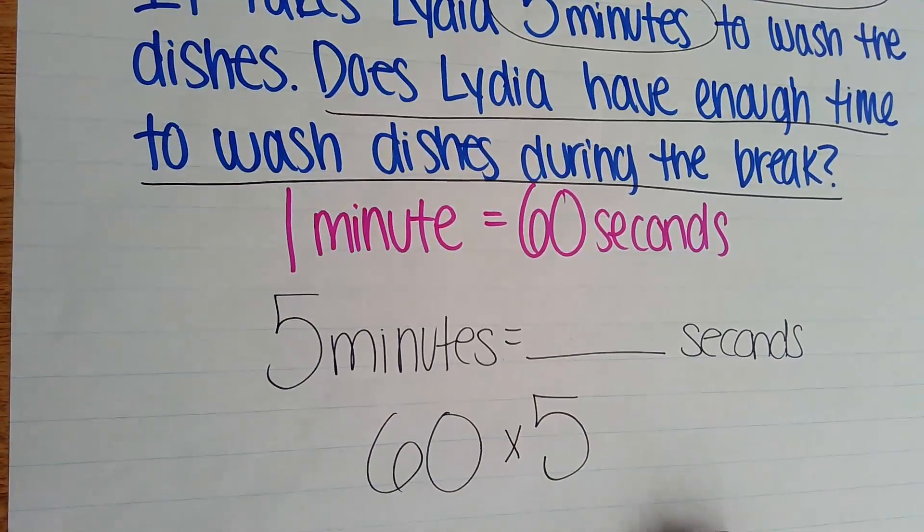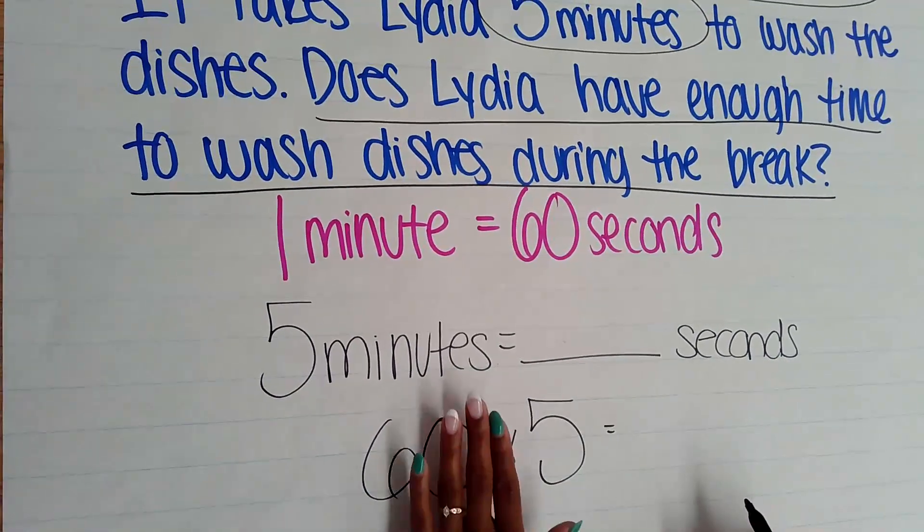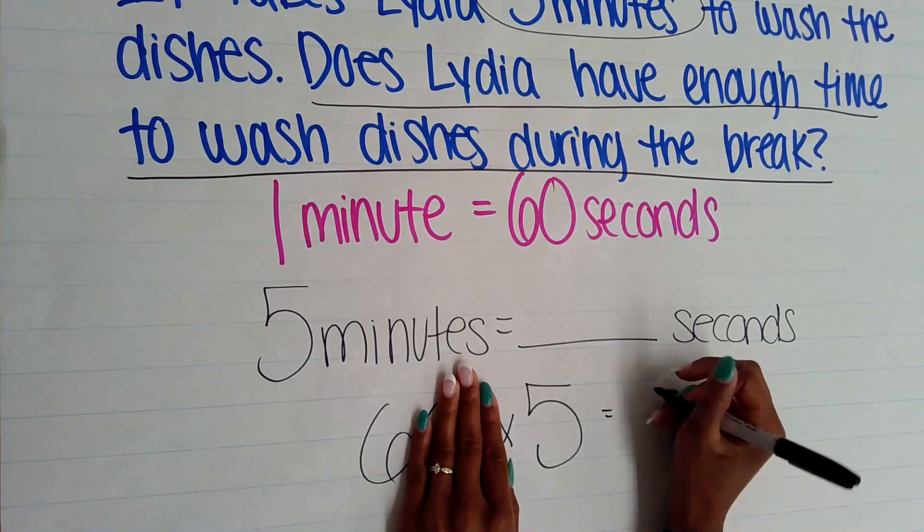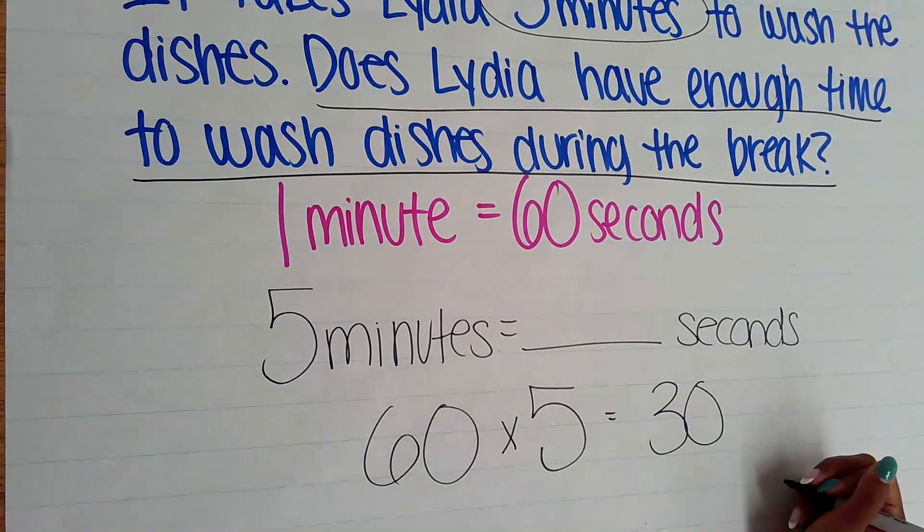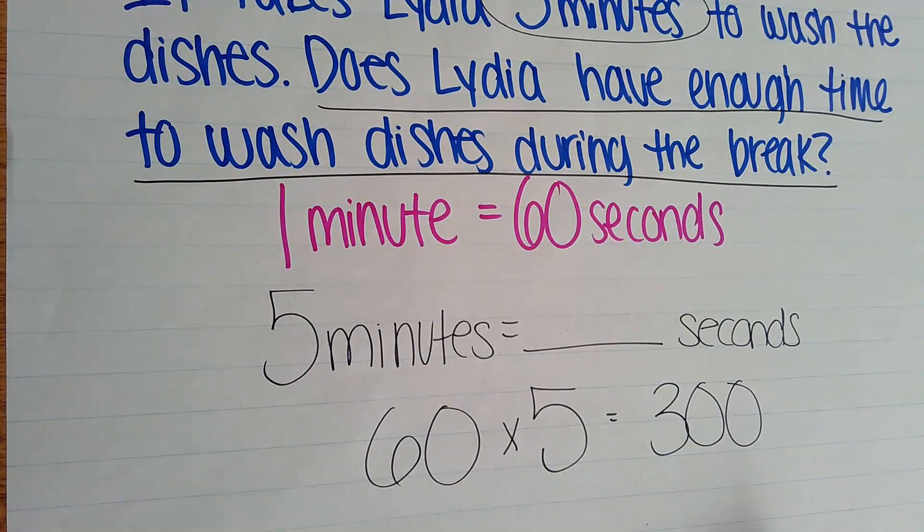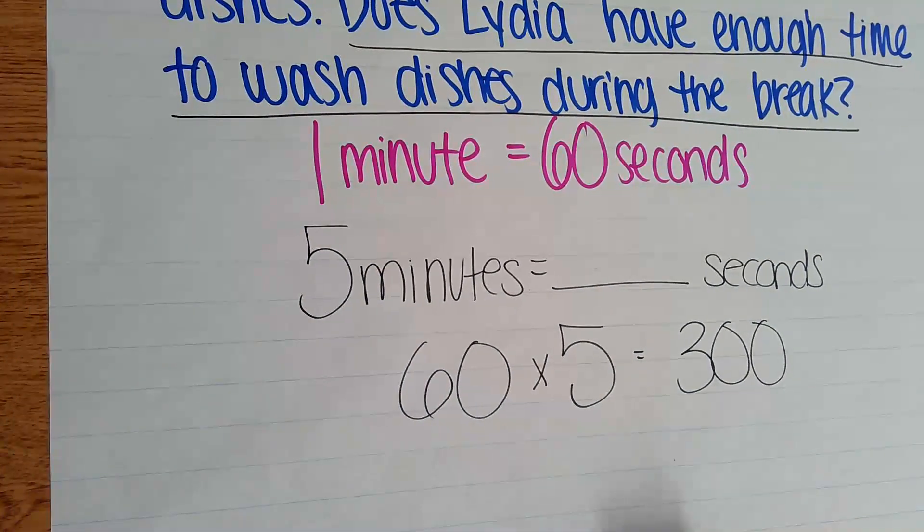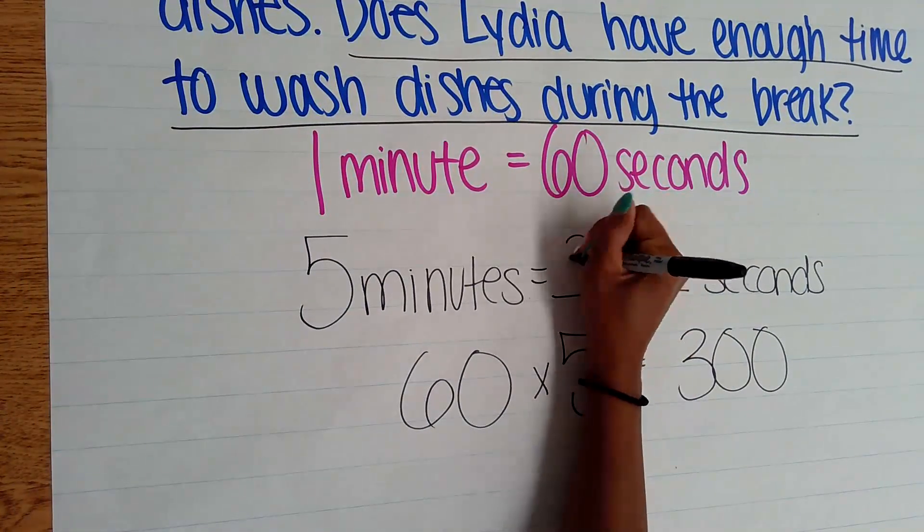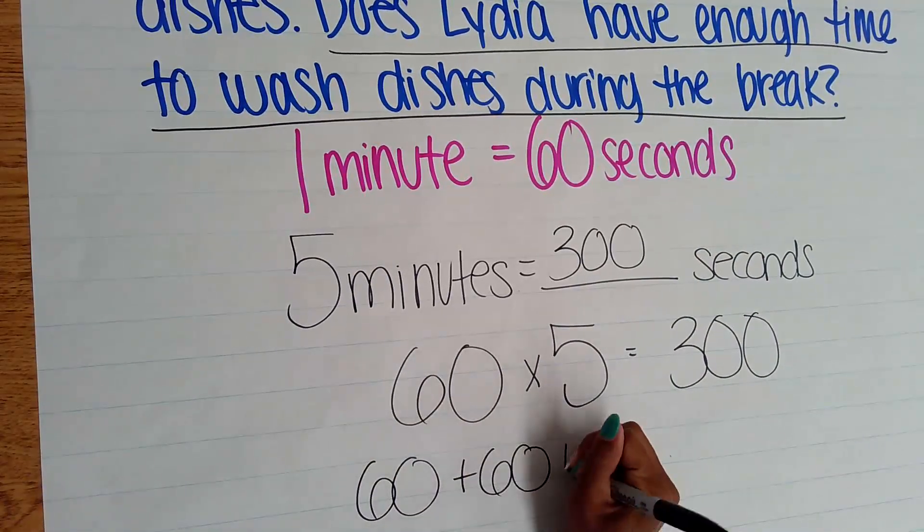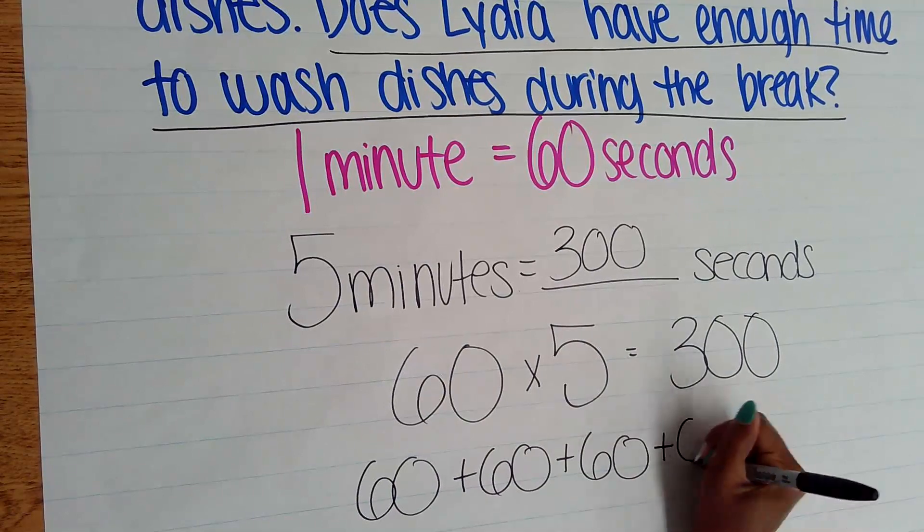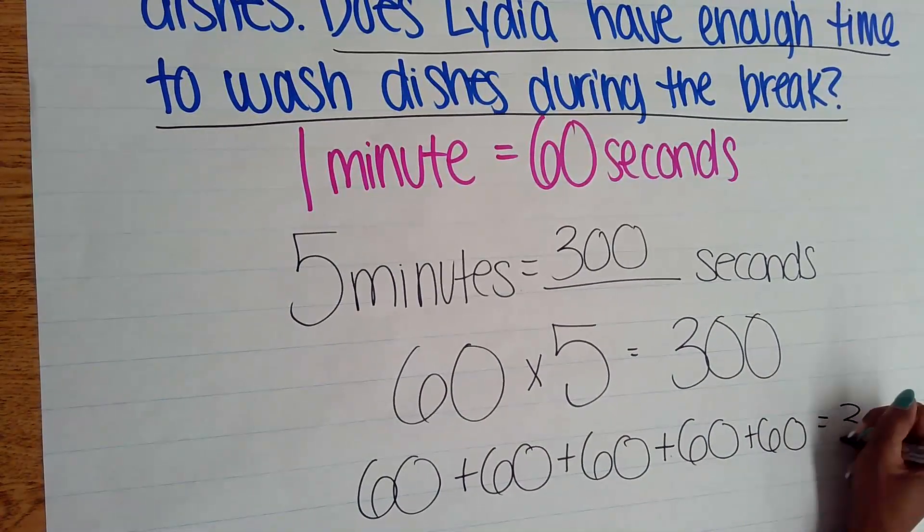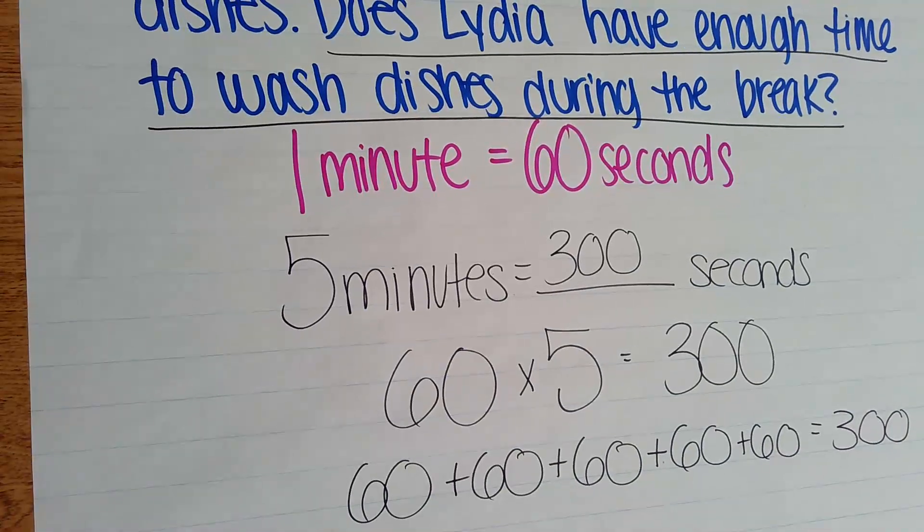So students can use their zeros trick—they can cover up that zero, they know 6 times 5 gives them 30, and then add that zero back on to give us 300 seconds. Students could also use repeated addition. They could take that 60 and they could add it together five times to also give them the same answer of 300 seconds.